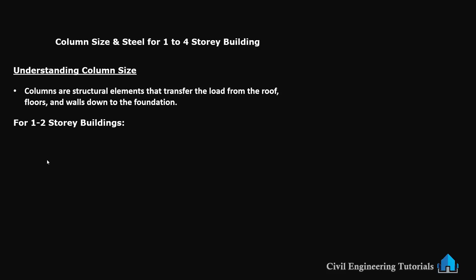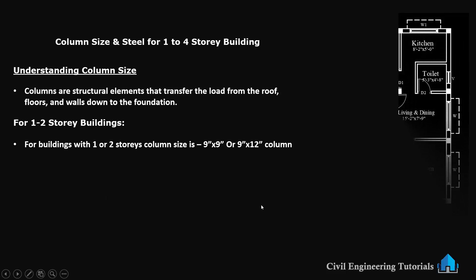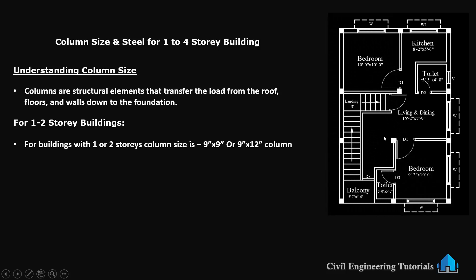For buildings with 1 or 2 storeys, the column size is generally smaller because the load is lighter. We typically use a 9 inch by 9 inch or 9 inch by 12 inch column. For example, if you are constructing a small 2 storey house with concrete floors and brick walls, a 9 inch by 9 inch column is sufficient to carry the load of the building. Columns are placed at the corners of the house and in between.